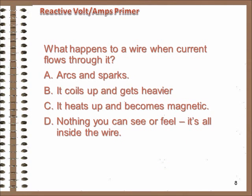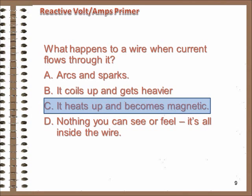Quick review: what happens to a wire when current flows through it? It warms up from the friction of moving charges, and it gets magnetic, because the moving charge aligns magnetic forces already in the wire.